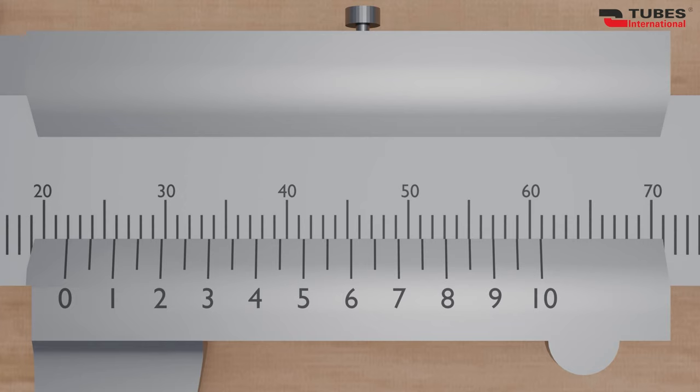You can also use the caliper to measure depth. For this, place the edge of the caliper on the surface of the object, and then insert the depth gauge into the hole. We read the dimension in the same way as with previous measurements. In this case, we see a dimension of 21.9 millimeters.